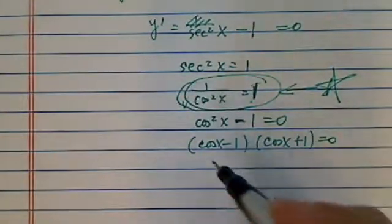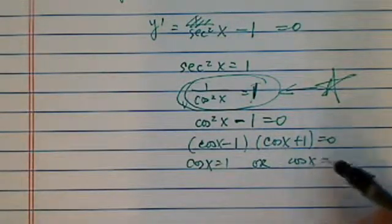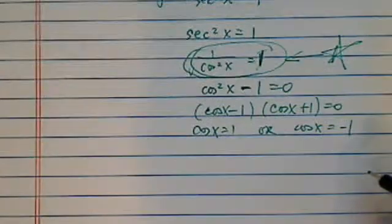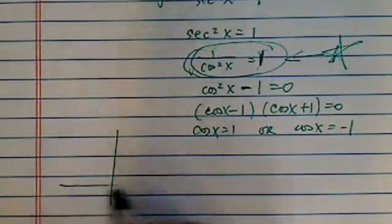Let's solve this one individually. You have cos x = 1 or cos x = -1. From here, it's probably easier to have a graph of a cosine function in mind.